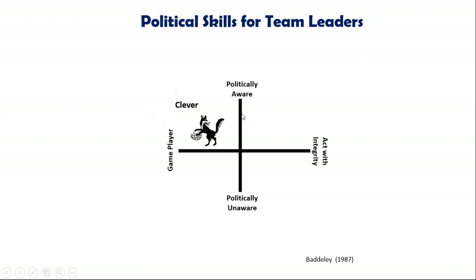Foxes can get away with a lot of things in the workplace; everybody knows they're a fox. They're on guard but, because they're quite politically savvy, they can often get away with things before people are aware of it. Hopefully you're not a fox. In the bottom left-hand corner are what we might refer to as donkeys — people who are inept in the sense that they are game players but politically unaware. They're on the take all the time but not very good at it, so they're not terribly successful working in teams.